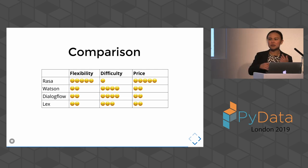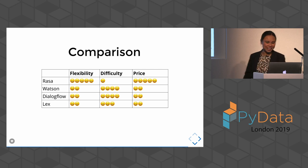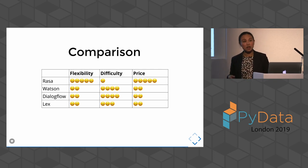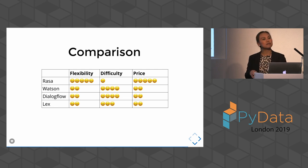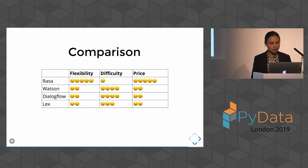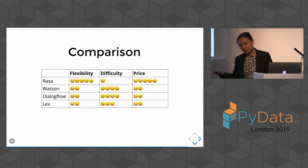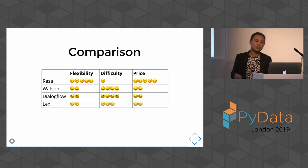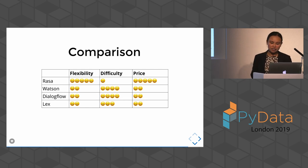For flexibility, Rasa is open source — it's completely flexible, you can add whatever you like or even change the code. For Lex, I can't change a lot — even for entities, I struggled to get them extracted the way I wanted. It's not very customizable. For difficulty level, Rasa requires you to write Python code, have understanding of NLP, and know how to deploy a web app. But I think it's totally worth it — I love learning new stuff. For price: open source is free, you can't beat that. The commercial services provide free versions to try, but if you want to use them professionally you'll need to pay for the service and support.